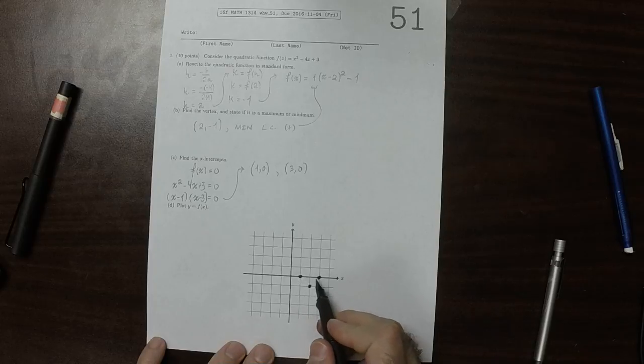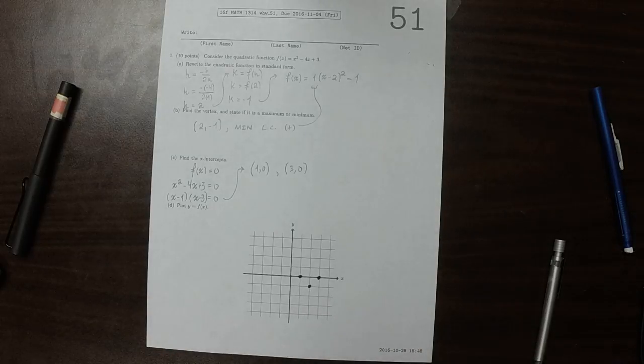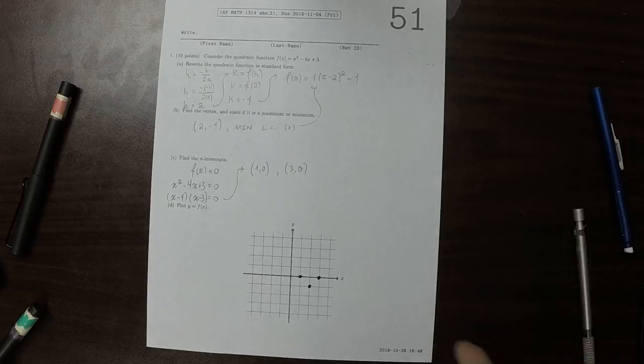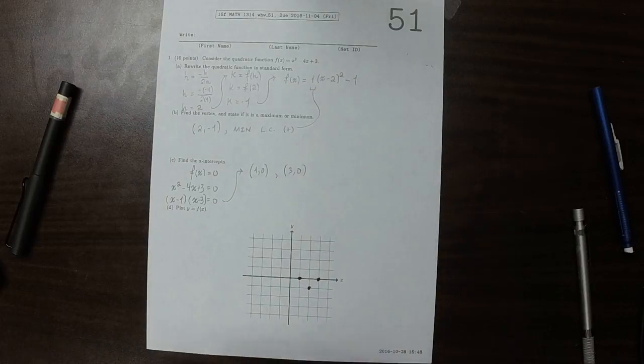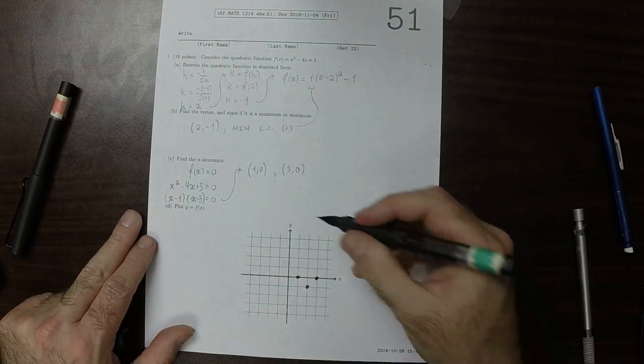Those are the two x-intercepts, and that is the minimum. The y-intercept is when we plug in x equals 0, so I'll go ahead and do that.